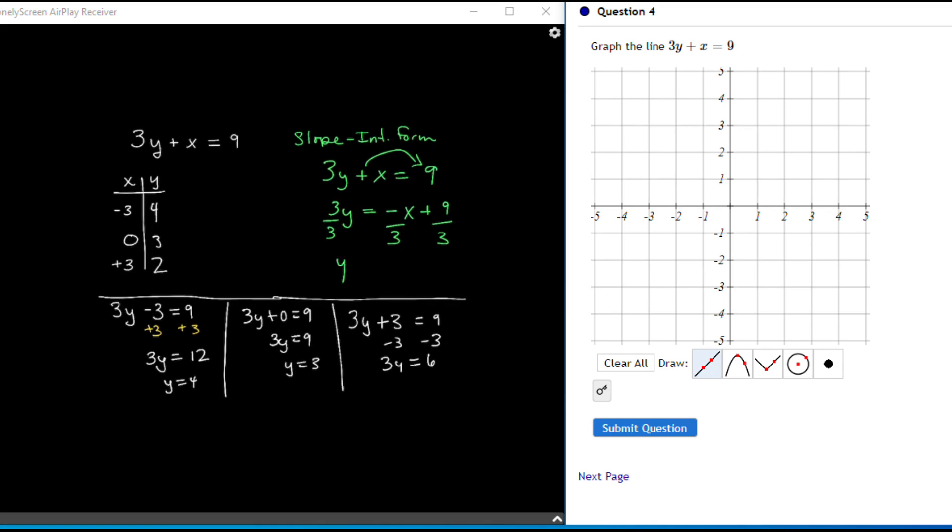When I do this, I have a slope of negative 1/3 and my y-intercept is at 3. Notice the y-intercept matches my value here, which is perfect.